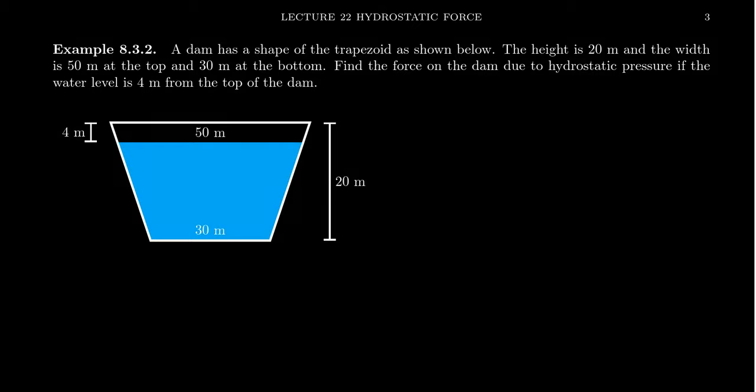So in this video, consider a dam that is shaped like a trapezoid as you can see in the image provided. The height of the dam is going to be 20 meters tall, which you see right here. The width of the dam, well it's dependent on where you are, it's 50 meters across the top and it's 30 meters across the bottom. And we want to determine what is the force on the dam due to the hydrostatic pressure if the water level is 4 meters from the top of the dam.